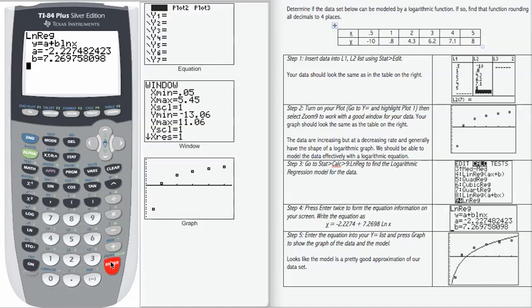Hit enter again, and it will give you the information to fill in for the coefficients a and b in your logarithmic equation. So you're going to fill in negative 2.2274 for a and 7.2698 for b.